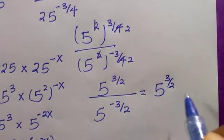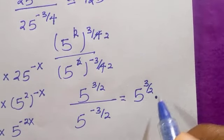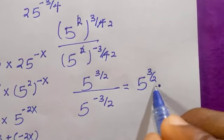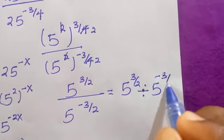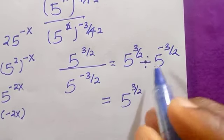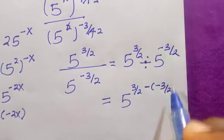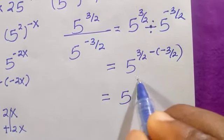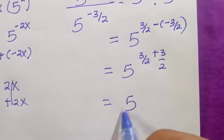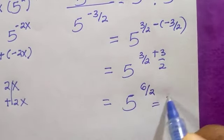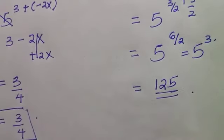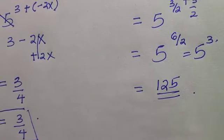We now have 5 raised to power 3 over 2 multiplied by 5 raised to power minus 3 over 2 transferred up. Changing division to subtraction of the negative exponent, we get 5 raised to power 3 over 2 plus 3 over 2, which equals 5 raised to power 6 over 2, which is 5 raised to power 3, and 5 raised to power 3 is 125. This proves the left-hand side equals the right-hand side.